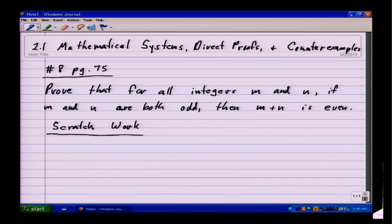This wouldn't be anything that when you write this up for credit you would have to show, but I think it helps to get us started on actually writing the proof. First I'm going to look at what the hypothesis of the statement says. Remember, the hypothesis is the if part, and so after if it says m and n are both odd.